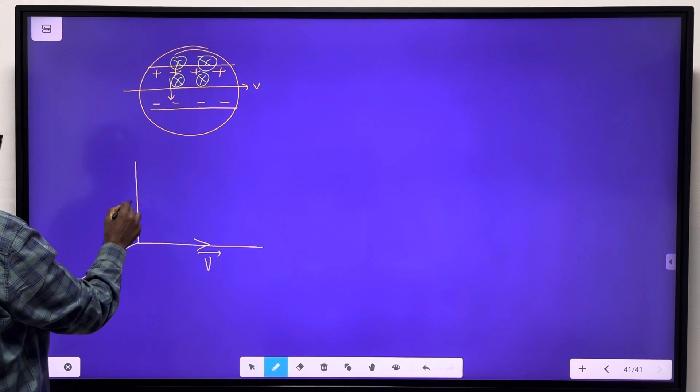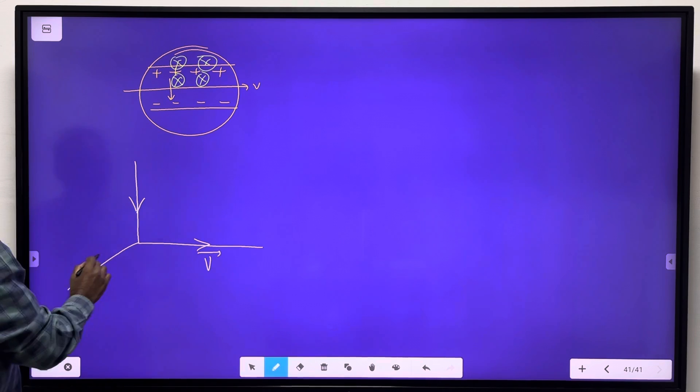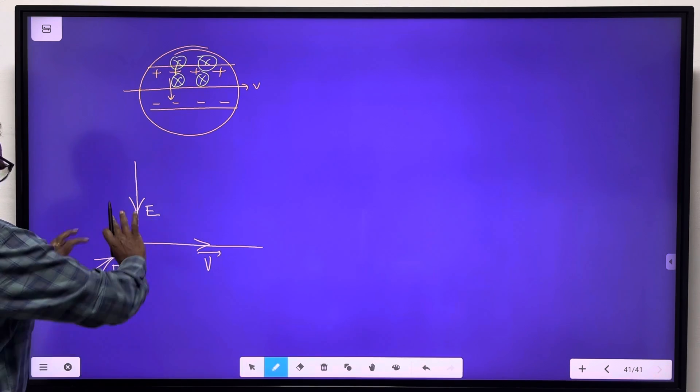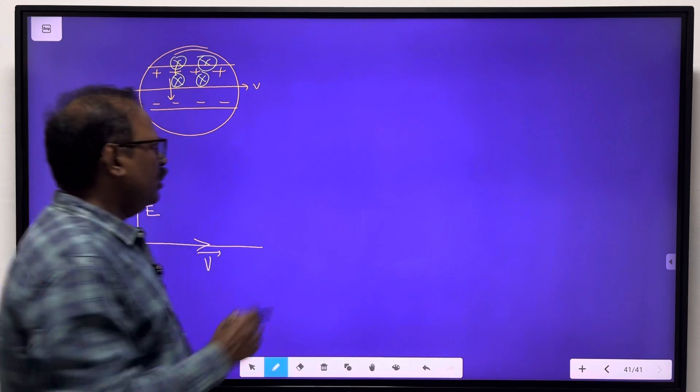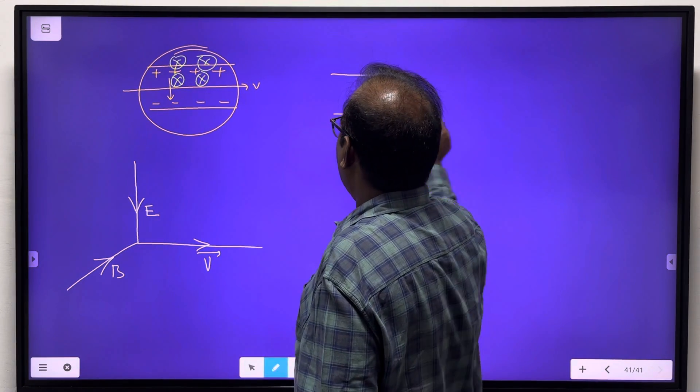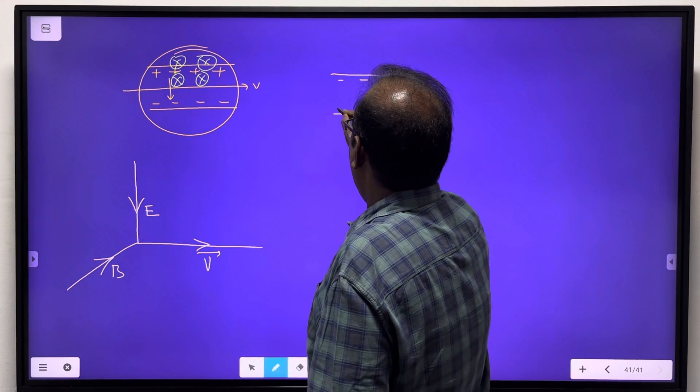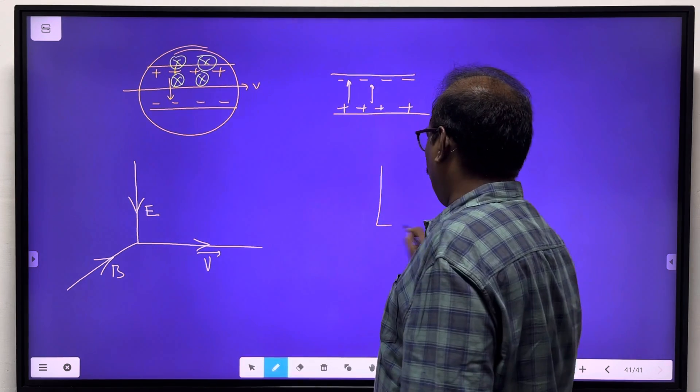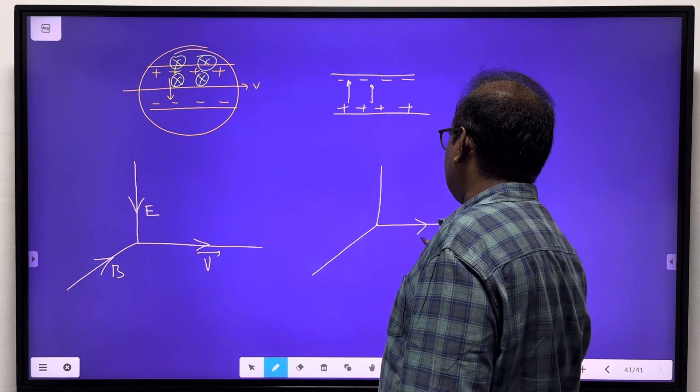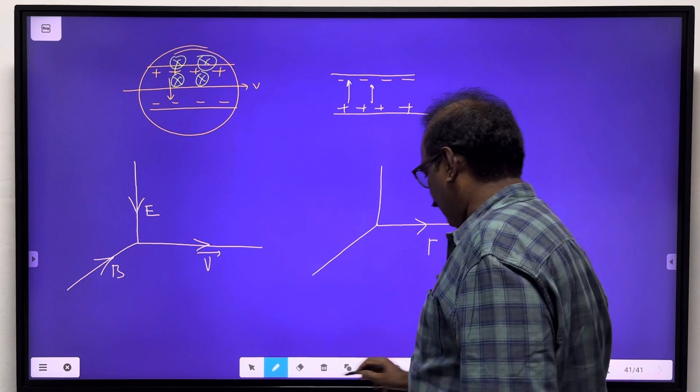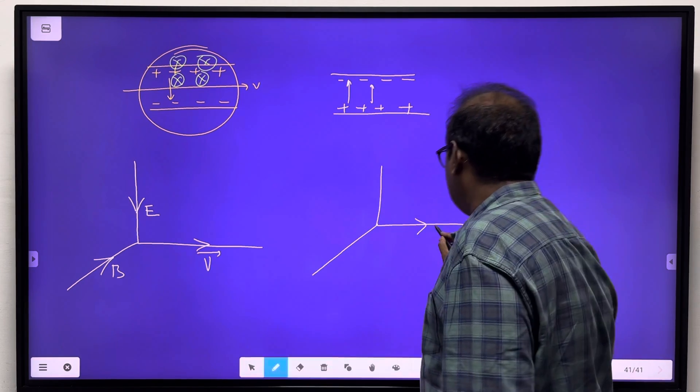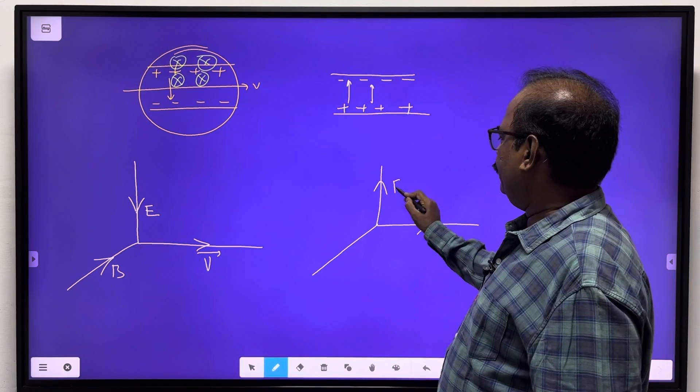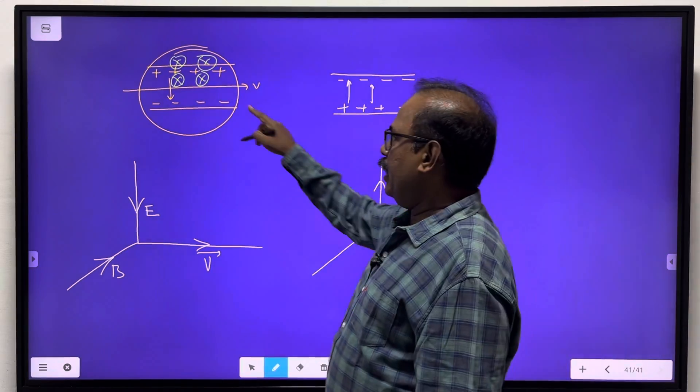What is the electric field? It is like this. Where is the magnetic field? It is going inwards. The electric field direction is like this, the magnetic field is inwards.